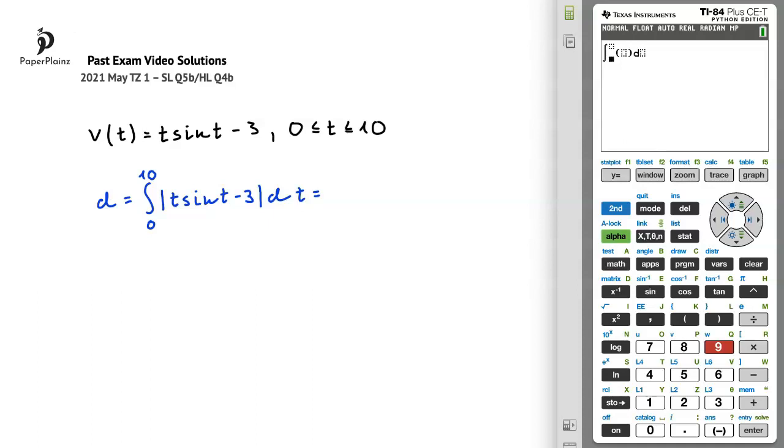We'll begin by entering the limits, so 0 and 10, then we'll enter the function using the absolute value, which we can find by pressing math, scrolling over to num, and choosing abs, so option 1. For t in our function, we'll use x, so we get x sin x, remember to close the brackets here, minus 3. We'll complete our integral by adding x here.